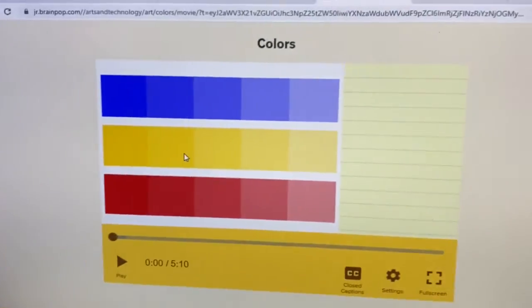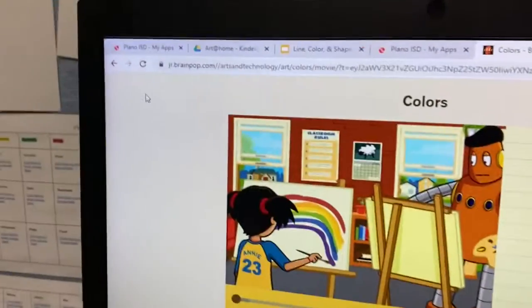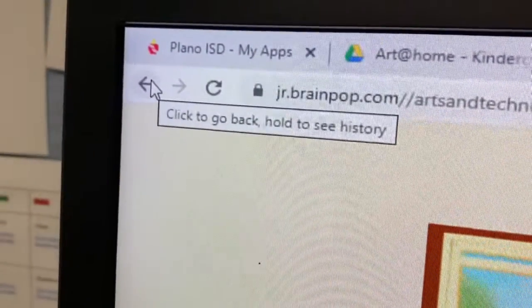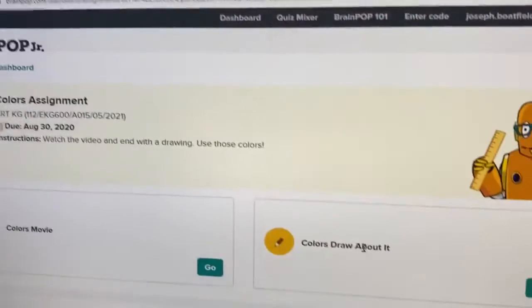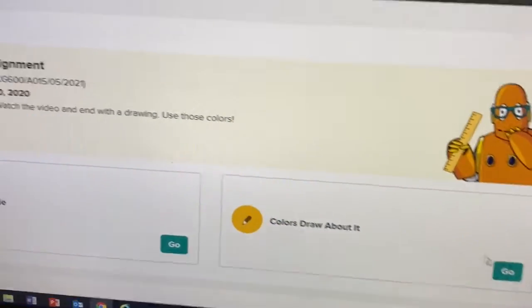Once you are done with the movie, you're going to press the back button. It's an arrow that looks like this. You'll go back to that screen you started and then I want you to try the colors draw about it.